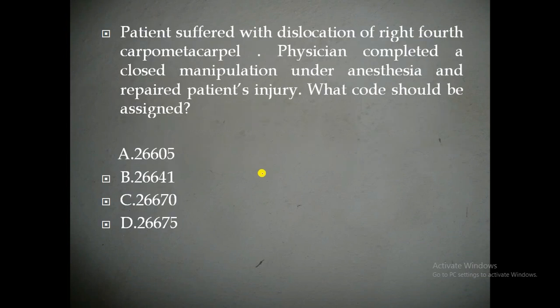Now the next question. Patient suffered with dislocation of right 4th carpometacarpal. Physician completed a closed manipulation under anesthesia and repaired the patient's injury. What code should be assigned? Option A: 26605; Option B: 26641; Option C: 26670; Option D: 26675.